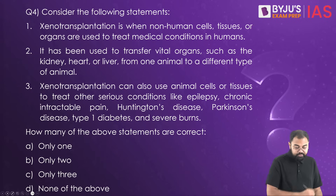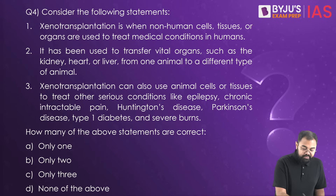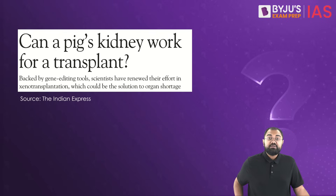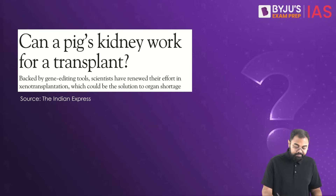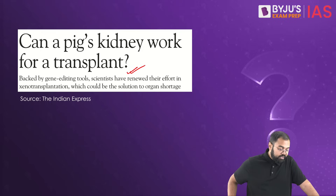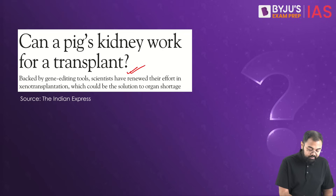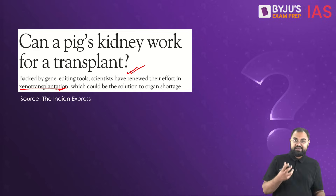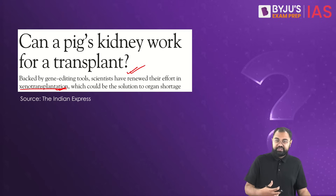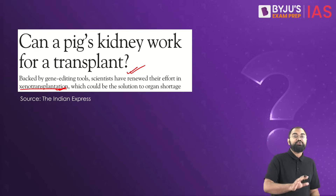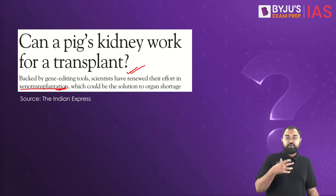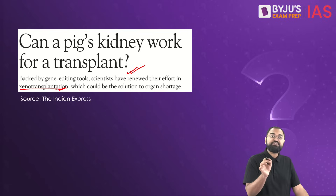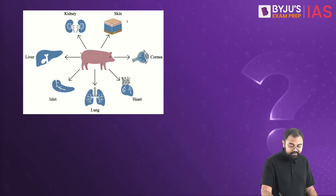Moving to question four about xenotransplantation. This comes from an Indian Express article asking: can a pig's kidney work for transplant? Xenotransplantation is when you take a cell, tissue, or organ from another species and use it on humans for transplant. Instead of taking an organ from another human, when the transplant organ is taken from another organism, it is called xenotransplantation.